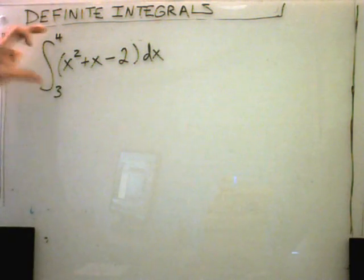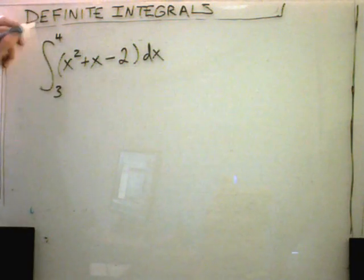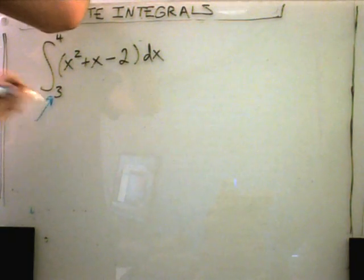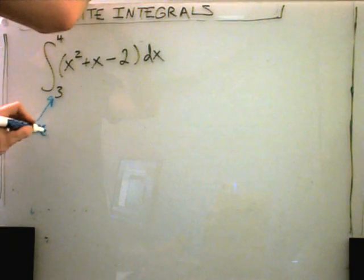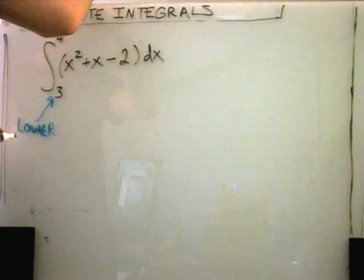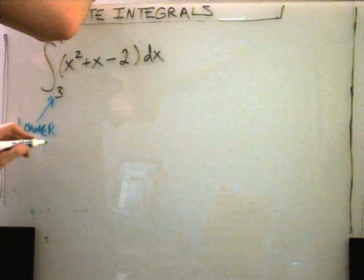First off, notice we have these numbers in the top and bottom of our integral sign. These numbers are aptly named. The bottom one is called the lower limit of integration.